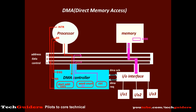Having transferred one data word, the content of the starting address register is incremented or decremented depending on the direction of transfer. Here the content is incremented, showing that the next word is to be written to location 1001. Since one word is already transferred, the word count register is decremented, showing that 19 more words remain. The DMA controller places the new address on the address bus, the control information on the control bus, and the IO module places data from IO device 1 onto the data bus to be written to location 1001.